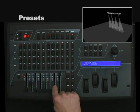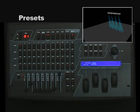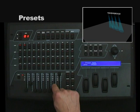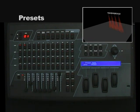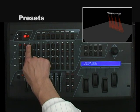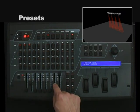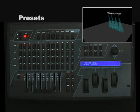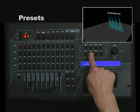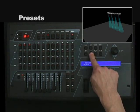I will name this preset 'aqua' and store it on button 2. I will adjust my color channel to the next color, which I will name 'orange,' and store it to button 3. Adjusting the fader to the next preset, I will name this one 'light blue,' using the cursor buttons to move the cursor and the data wheel to make adjustments.